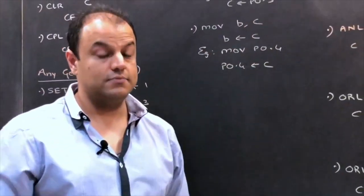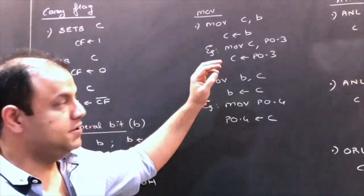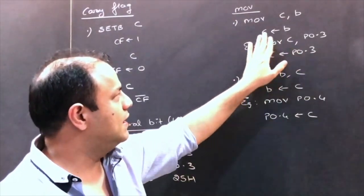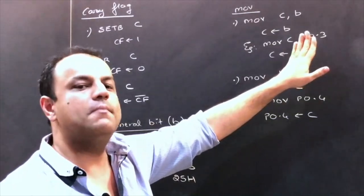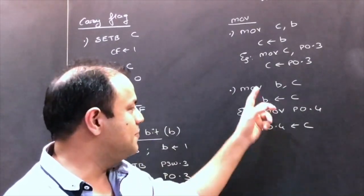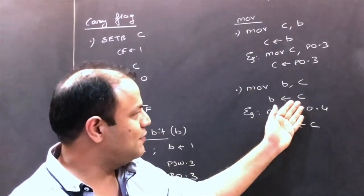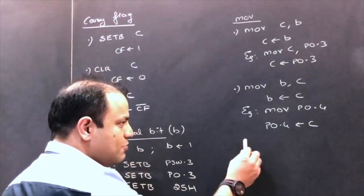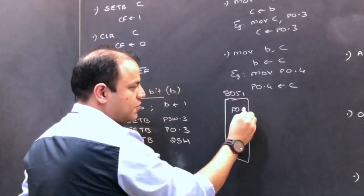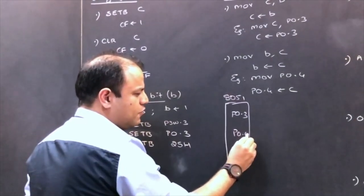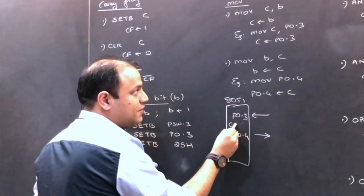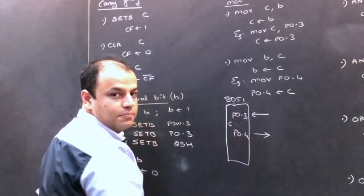Then you have movement — the bit version of the MOV instruction. When you write MOV C, bit, the carry flag gets the value of that bit — for example, MOV C, P0.3 takes the value from port 0 bit 3 into the carry flag. Similarly, MOV bit, C transfers from the carry flag to another bit, like MOV P0.4, C. So what you've done is taken the value from P0.3 into the carry flag, then sent it out on P0.4.